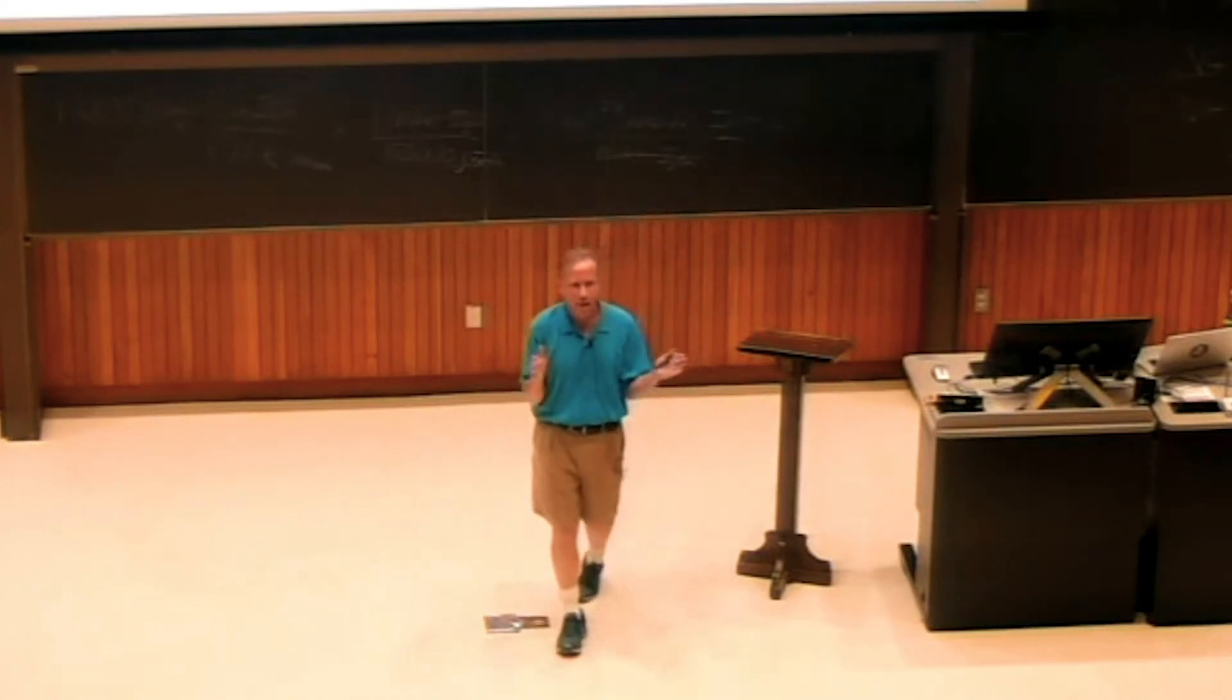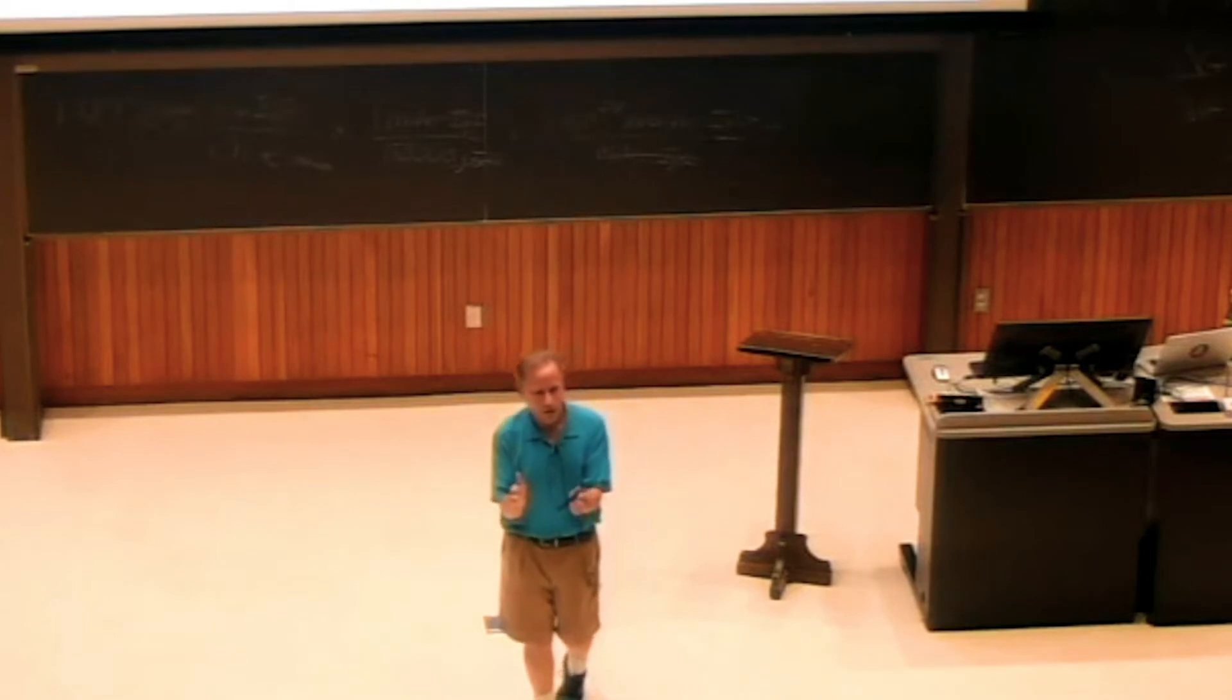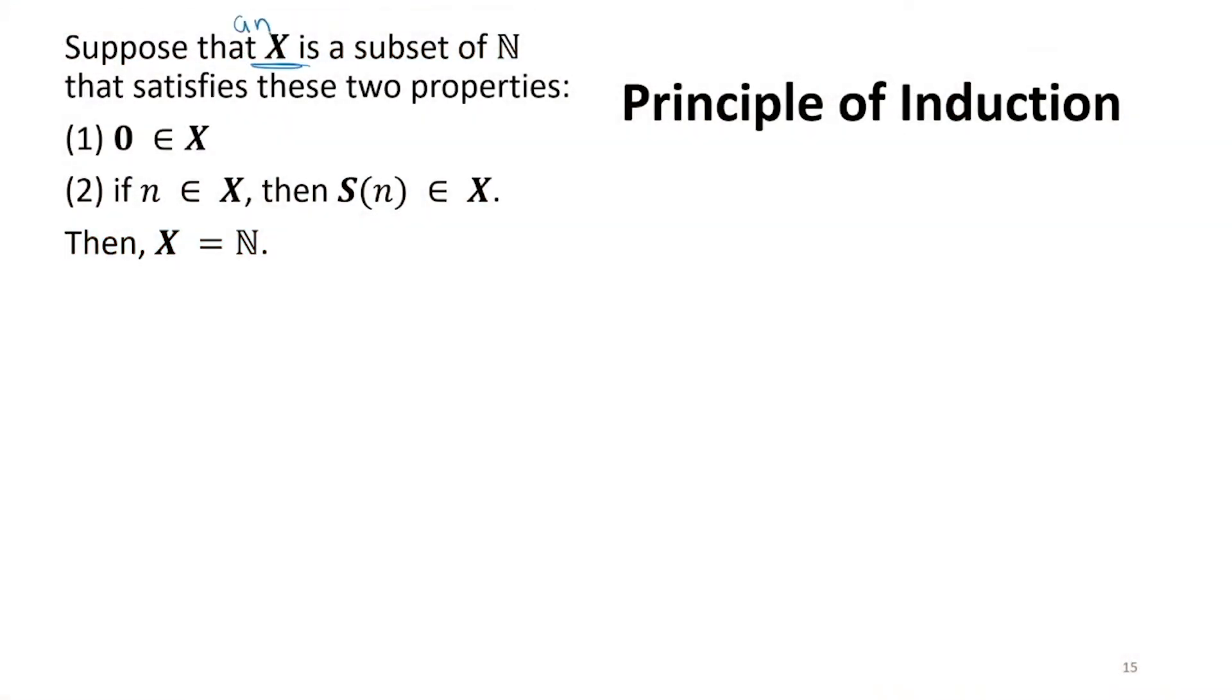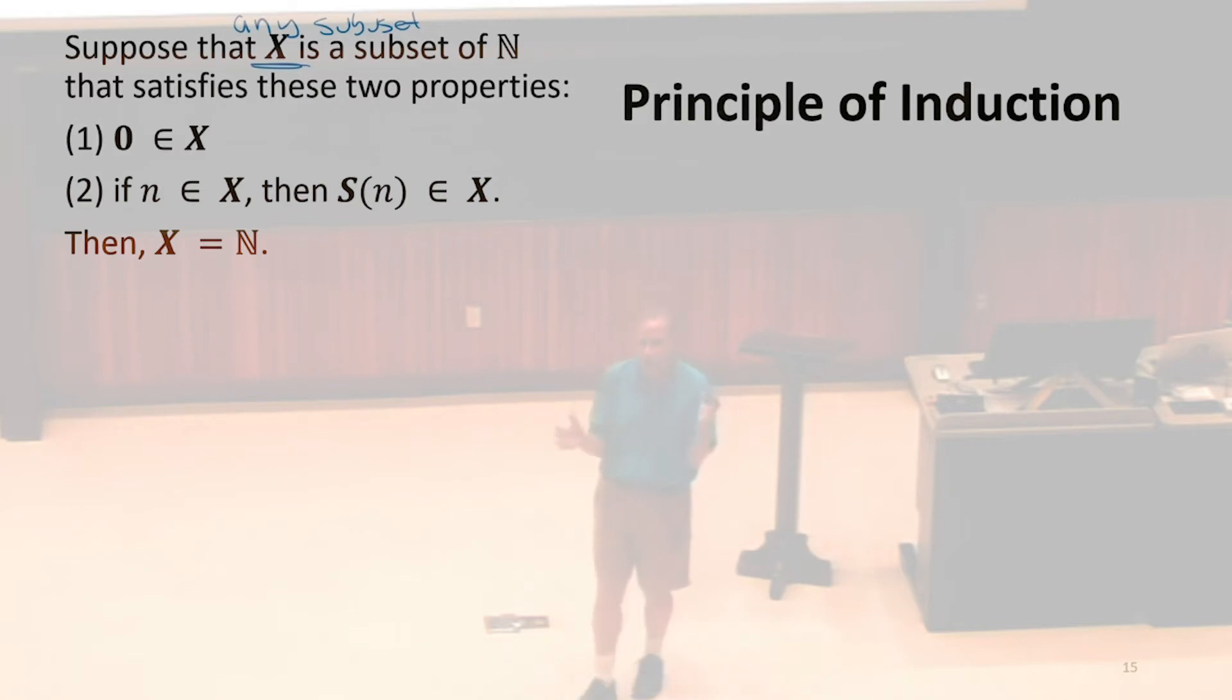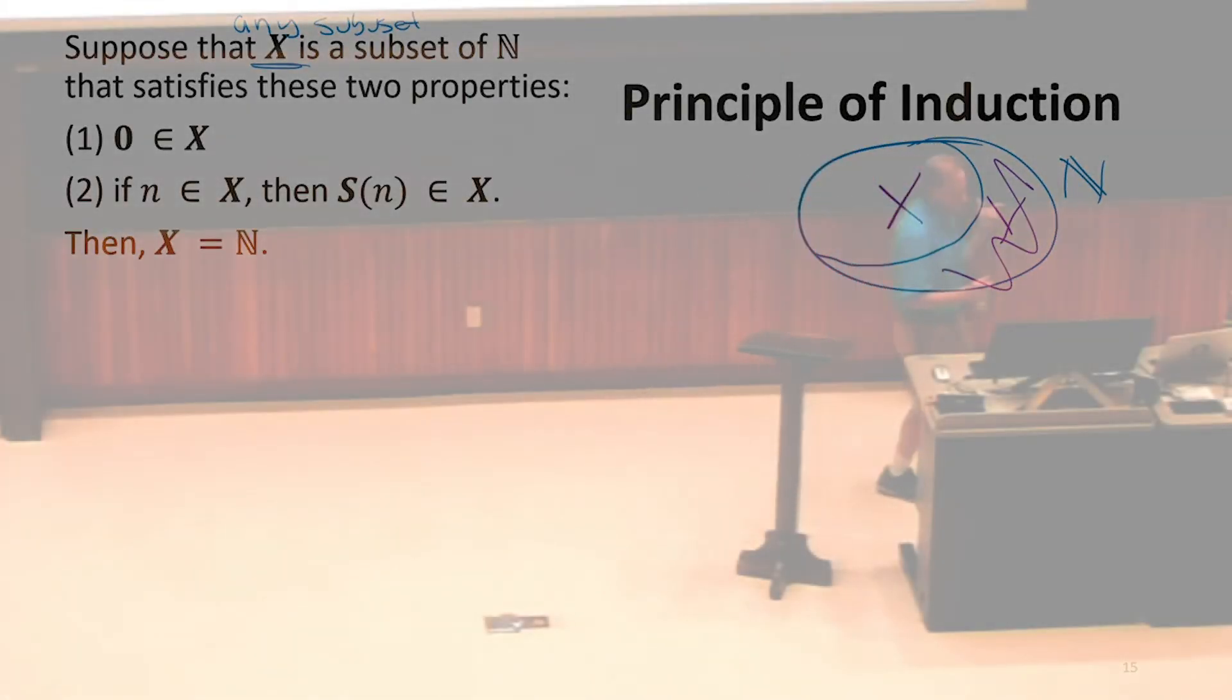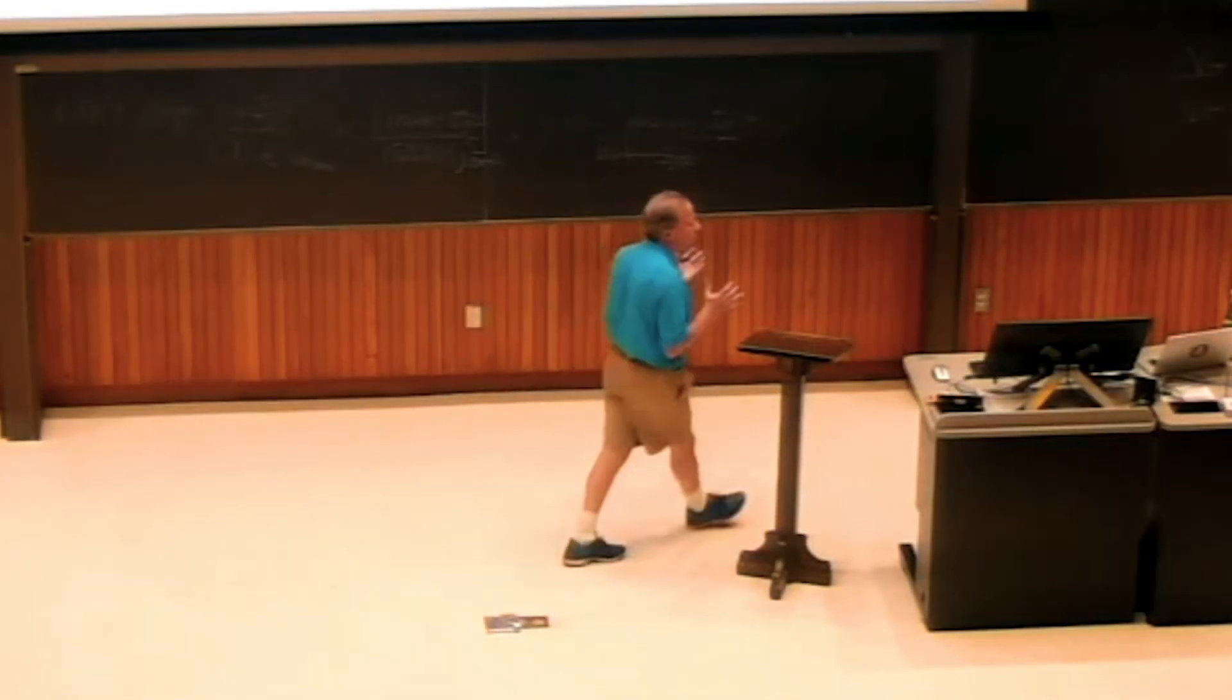Anytime we're trying to prove something about everything, the strategy of looking for a contradiction is not always going to work, but it's a good one to think of. Because to get a contradiction for something that is a proof about all, this is for any subset, we can get a contradiction if we can find one that it's not true for. If we're trying to prove a for all kind of thing, to get a contradiction, we just have to find one case where it's not true. Let's assume to get a contradiction that it's not true. This is N. If it's not the case that X equals N, then there's some set Y of the elements of the natural numbers that this is not true for.